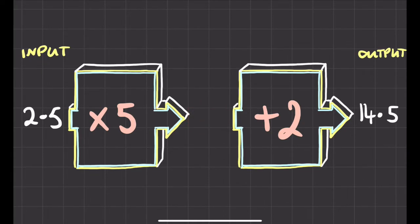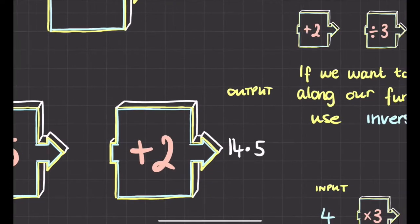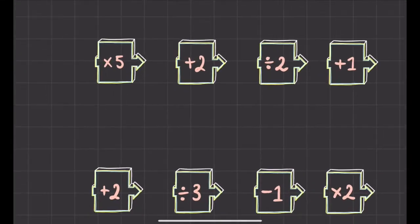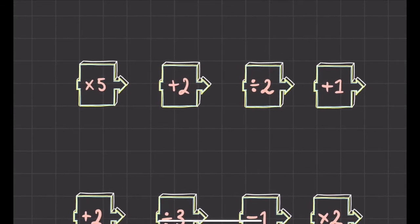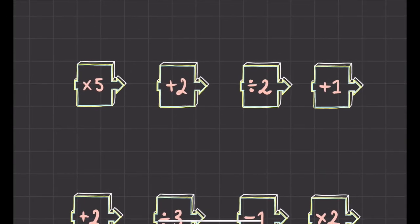Lovely jubbly. Okay, we could make our function machines even longer if we wanted to. So let's give you a quick example. I could put into this function machine the number 2, and we could do 2 times 5 is 10, 10 plus 2 is 12, 12 divided by 2 is 6, and 6 plus 1 is 7.